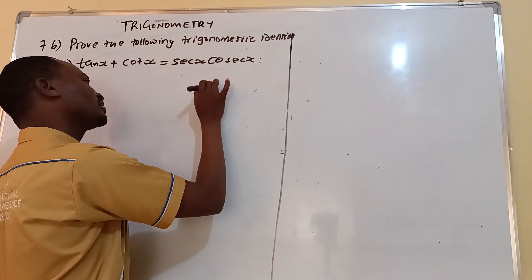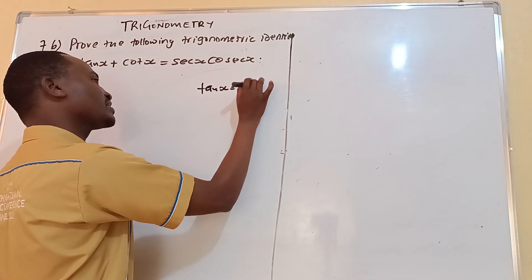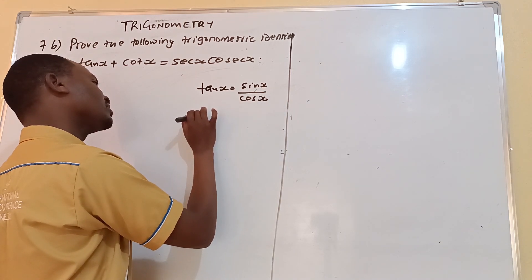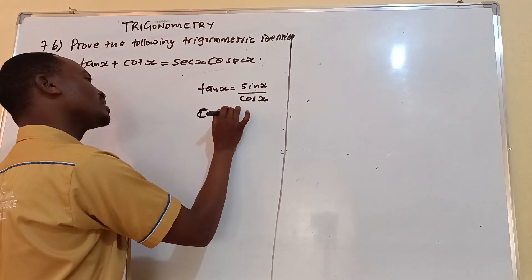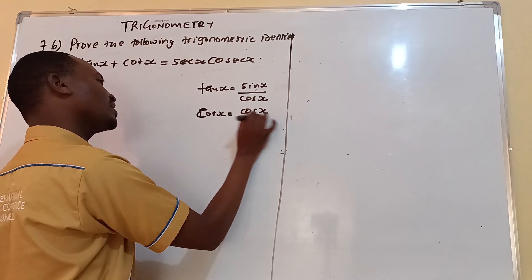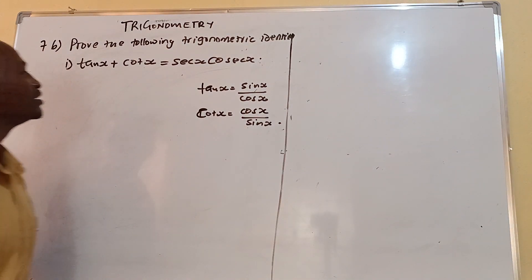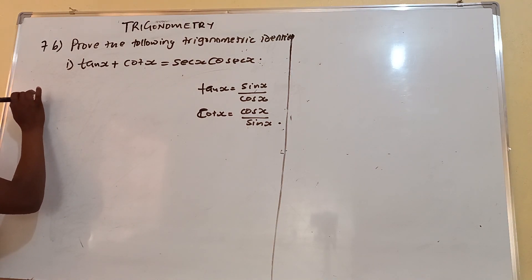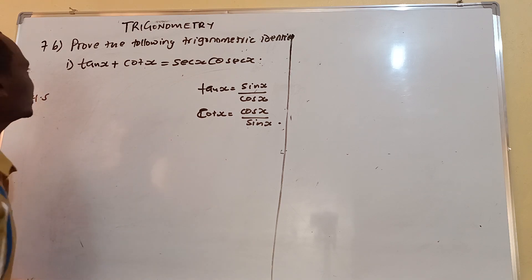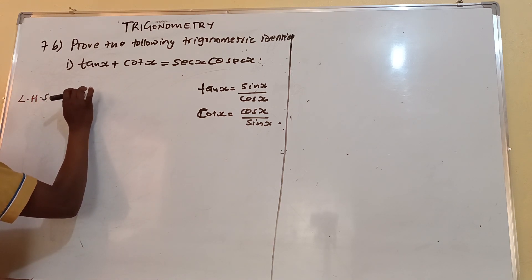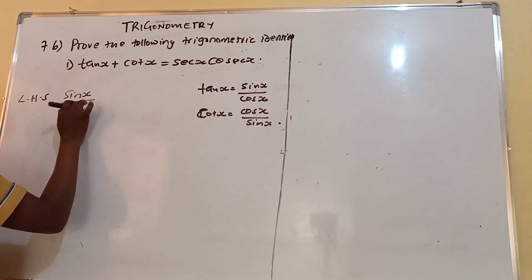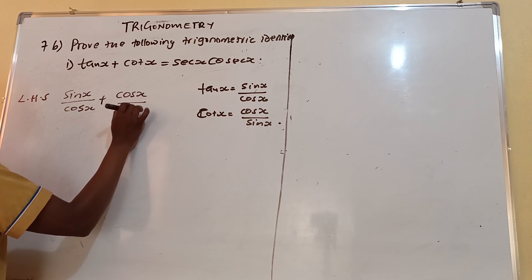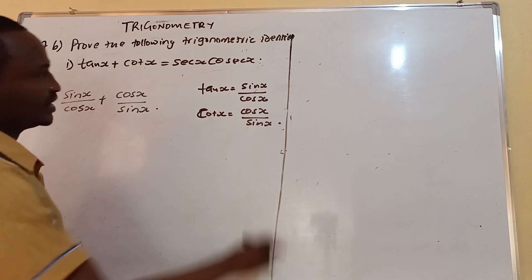We said previously that tan X is equal to sin X over cos X, and cot X is equal to cos X over sin X. So this is pretty simple. We will now say, taking the left hand side, this will be sin X over cos X plus cos X over sin X. We want to see whether they will reach the right hand side.